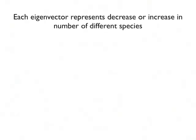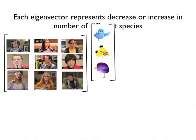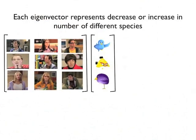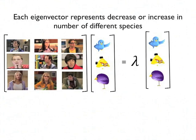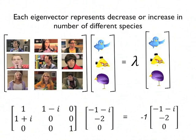Think of these eigenvectors as representations of decrease or increase in number of different species of birds on the island. So, during their stay, the number of bird species got transformed to lambda times the number of bird species that originally existed on the island.